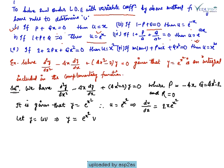Example: Solve d²y/dx² − 4x·(dy/dx) + (4x² − 2)·y = 0. Here, the coefficient of dy/dx gives P = −4x, the coefficient of y gives Q = 4x² − 2, and R = 0. It is also given in the question that y = e^(x²), so we take u = e^(x²).